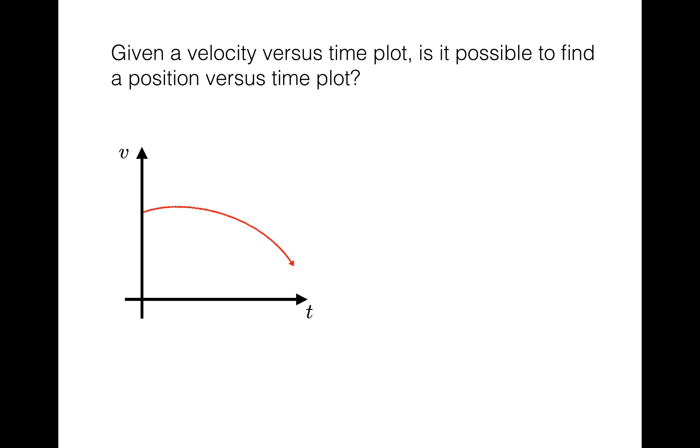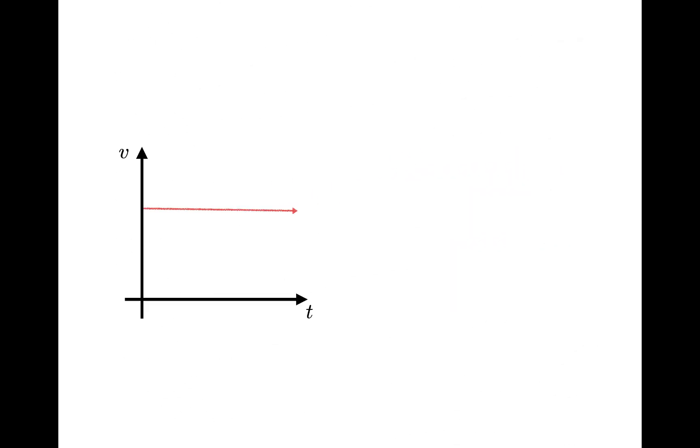I want to build to the answer by starting with a really simple example. This is a plot of velocity versus time where the velocity is constant. As a reminder, that means the thing is cruising along a straight line without speeding up or slowing down. Remember that average velocity is defined as change in position over change in time. Turning that around, change in position is equal to average velocity times the time interval. For this plot, velocity is constant, so the average velocity is the velocity. If I pick any time interval, the average velocity times the time is equal to the change in position, or the displacement. In other words, it's the area of that rectangle.